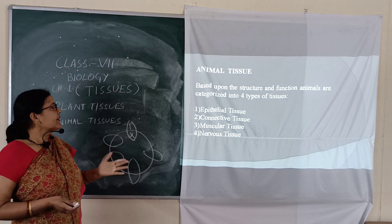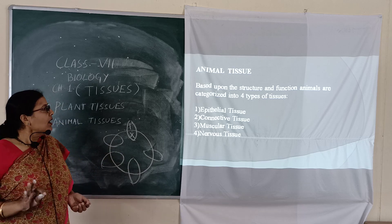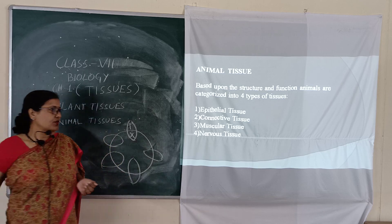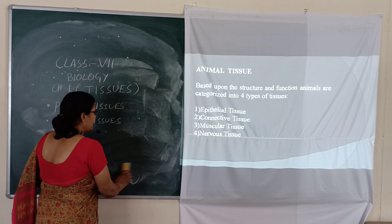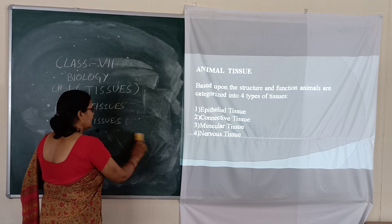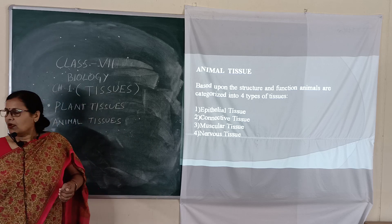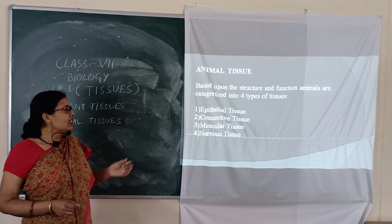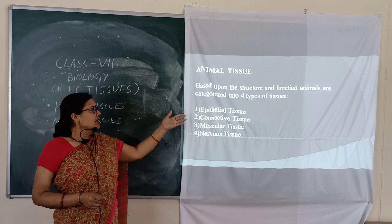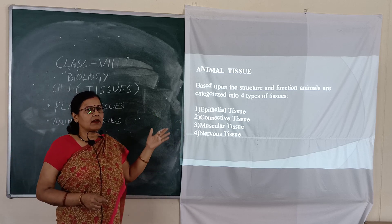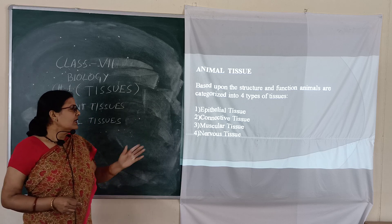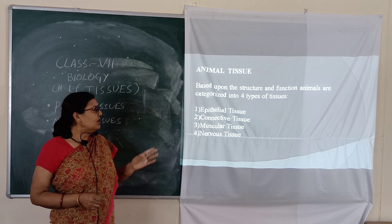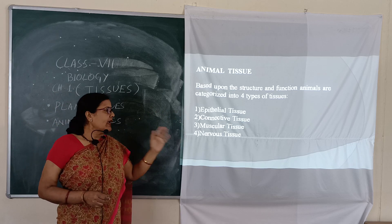Now we switch to animal tissue. Based on structure and function, animal tissue is divided into four groups. Higher animals have all types of tissues in their body parts. Different types of tissues combine together to form a specific structure called an organ — for example, the heart is made up of muscular tissue. The four types are: epithelial tissue, connective tissue, muscular tissue, and nerve tissue.